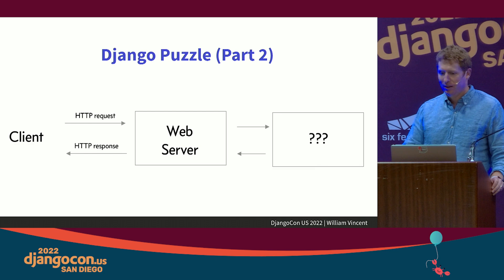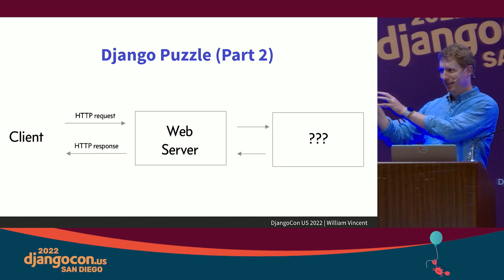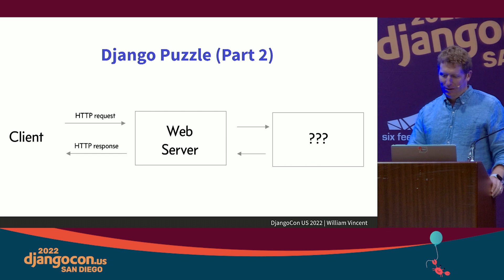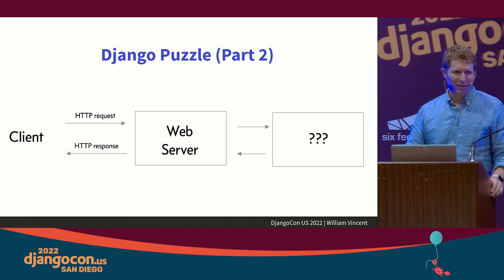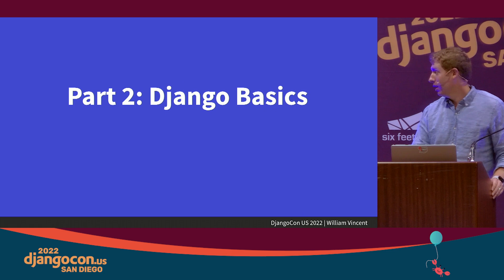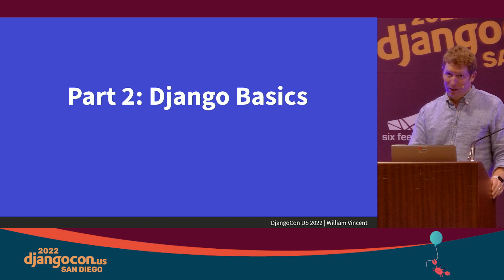Building out our diagram: we have client, request-response, web server — and magic. We're going to fill in that magic. When you run `runserver` it also runs Django's system check framework, so you'll often see error messages. When you run `runserver` for the first time you'll have 18 unapplied migration warnings — that's confusing to people.